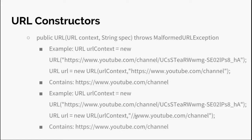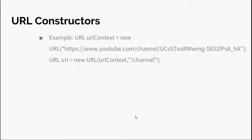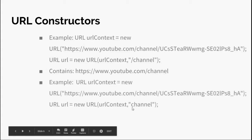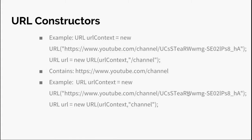In the third example, both protocol and authority are missing, so both are taken from the context. If a forward slash is specified, the path is treated as absolute — protocol and authority come from the context, the context's path is discarded, and the new path is appended, giving youtube.com/channel. Without a forward slash, the path is relative, and the last segment of the context's path is replaced.